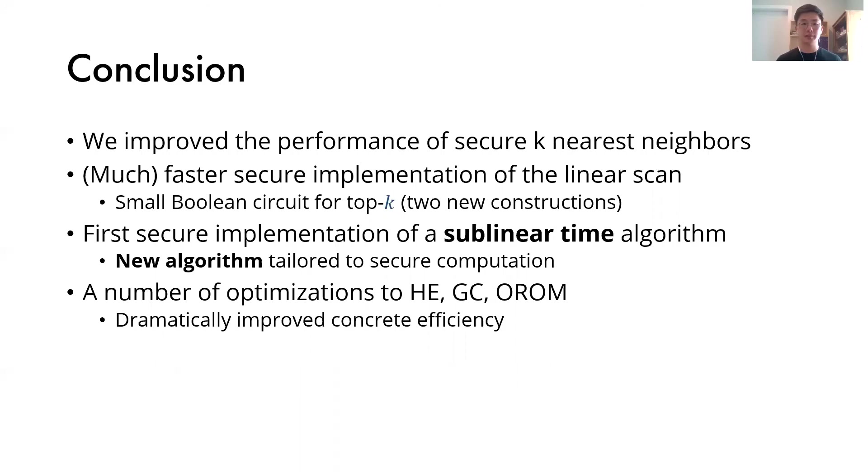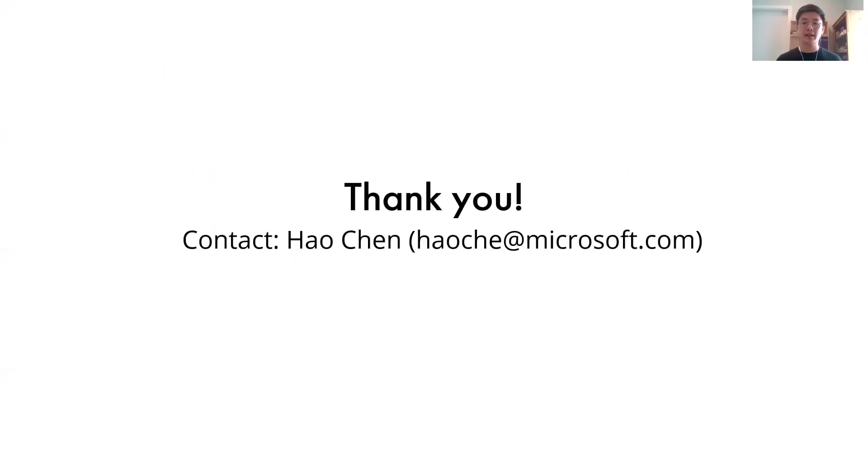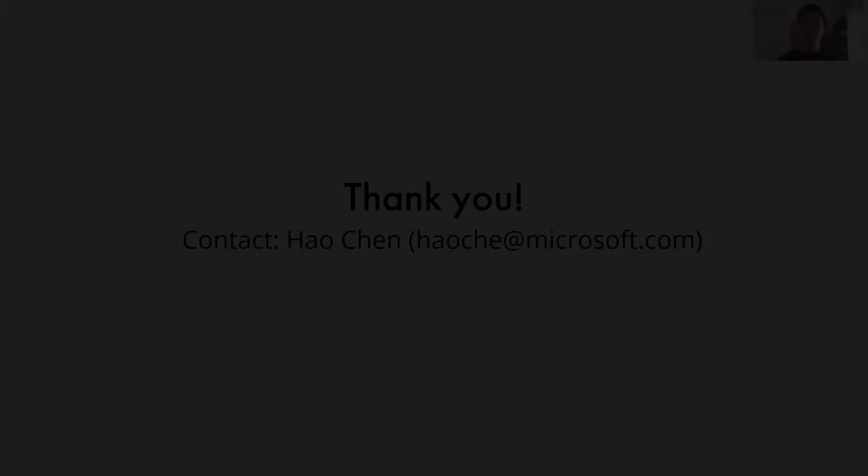As a result, our protocols can find 10 nearest neighbors on 10 million 96-dimensional vectors with accuracy 0.9 in just under 6 seconds. This is up to 31 times faster than optimally implemented prior work, which uses a linear scan algorithm. And with that, I will conclude my talk. Thank you very much.